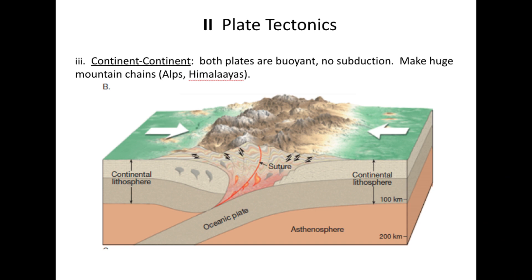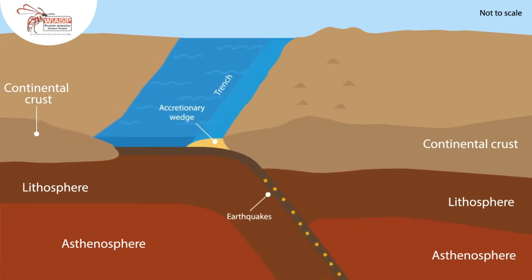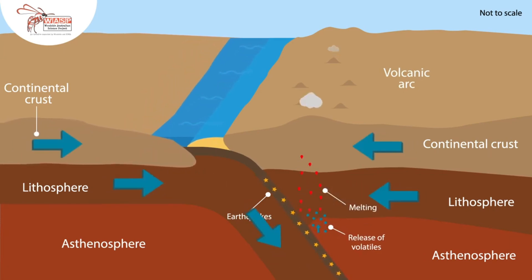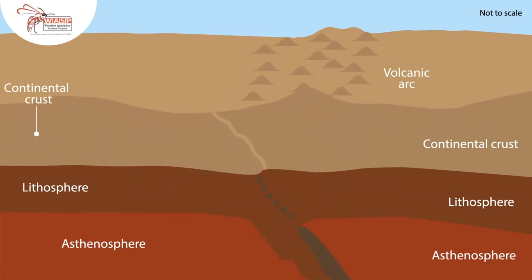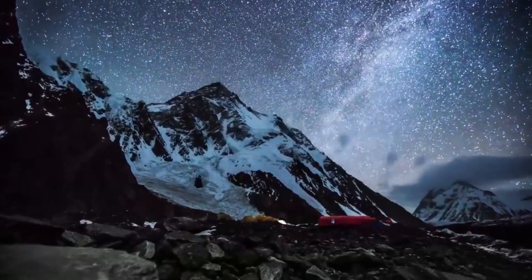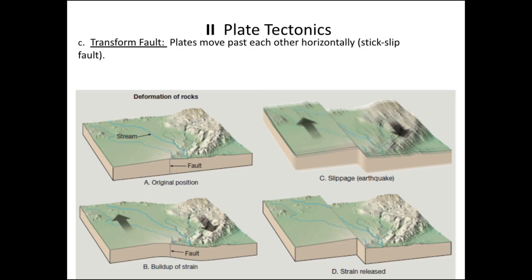The last type of convergent boundary is continent-to-continent. Both continents are buoyant — they float high in the mantle — so neither subducts, meaning there is no volcanism whatsoever. Instead, the crust slams together and thickens, becoming very tall and extending very deep into the mantle. The Himalayas are the classic example, where India is still colliding with Asia and the mountains are still growing today. Because there's no active subduction, the rocks produced here are mainly metamorphic rocks.